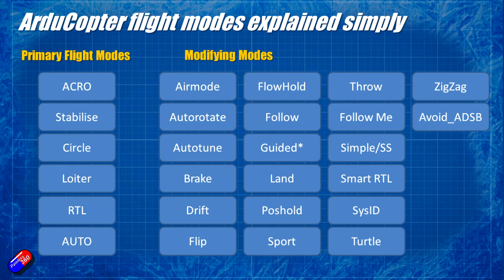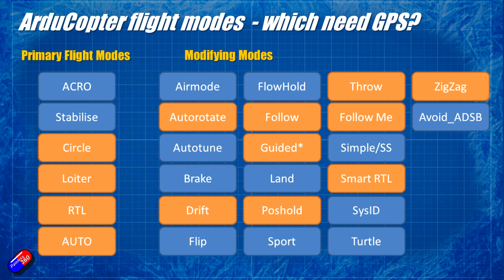There are an awful lot of flight modes, however the vast majority of pilots are only going to use the primary ones on the left-hand side, with occasionally autotune or something else unless there's a very specific reason. The modes highlighted in orange require GPS. Most pilots flying ArduCopter will have GPS and a compass anyway, but the key takeaway is that making sure you have a good GPS lock before arming and flying is really crucial, because an awful lot of the modes use it.